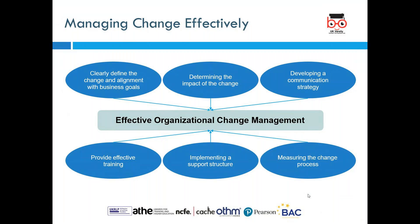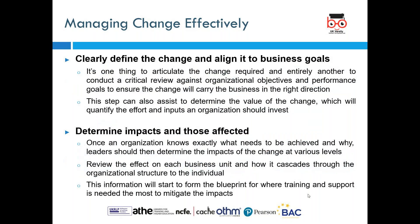Looking at these aspects: determine the impact of change, develop a communication strategy, provide effective training, implement a support structure, and measure the change process. Let's look into more detail for each of them. First, you need to clearly define the change and align the business with the goal. Each single member of the organization should have a clear understanding of what is happening and what the company is trying to achieve.